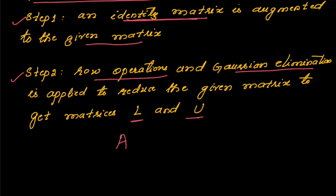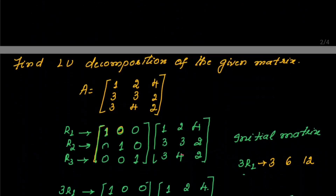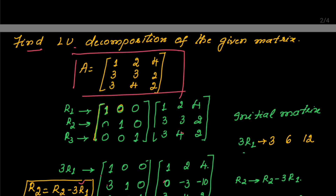If the given matrix is A, then you are going to decompose it into two simpler matrices, L and U, using row operations and the Gaussian elimination method. Let us see one example here. In this example, the question is: find the LU decomposition of the given matrix. This will be given in the problem statement.